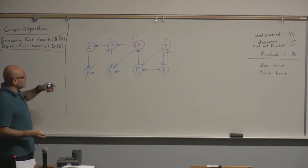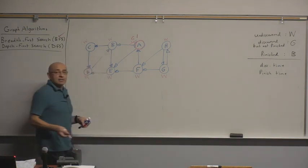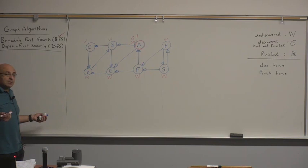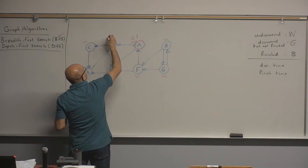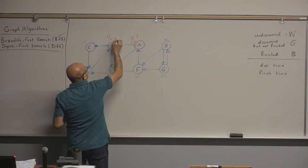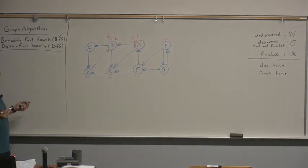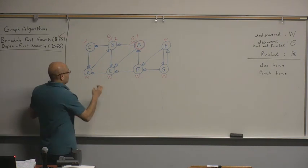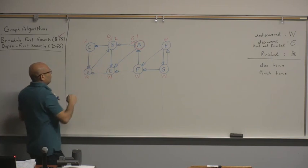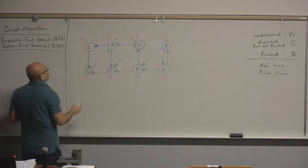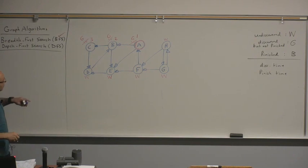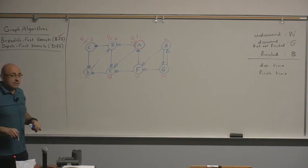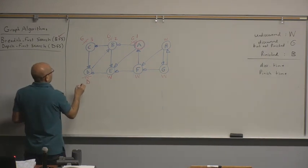We look at the adjacency list of A, which has B and E. Sticking to alphabetical order, we go to B. B is now discovered, colored gray, with discovery time 2. Then we look at the neighbors of B — C and E — and go to C first. C is now gray with discovery time 3. Then we go to D, the only neighbor of C. D is now gray with discovery time 4.